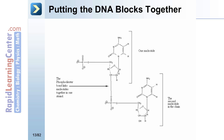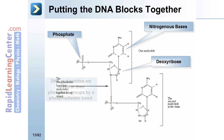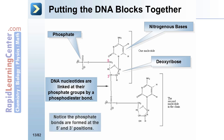Putting the DNA blocks together. The phosphodiester bond links nucleotides together in one strand. Here we have the phosphate groups, the nitrogenous bases — adenine, guanine, cytosine, thymine — and the deoxyribose sugar moiety. DNA nucleotides are linked at their phosphate groups in a phosphodiester bond; notice the phosphate bonds are formed at the five-prime and three-prime positions.